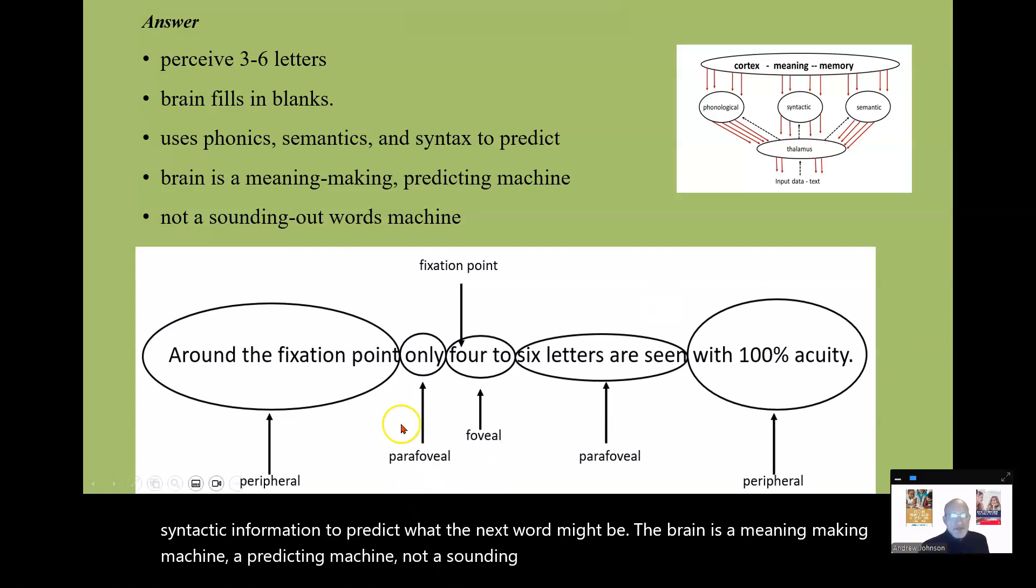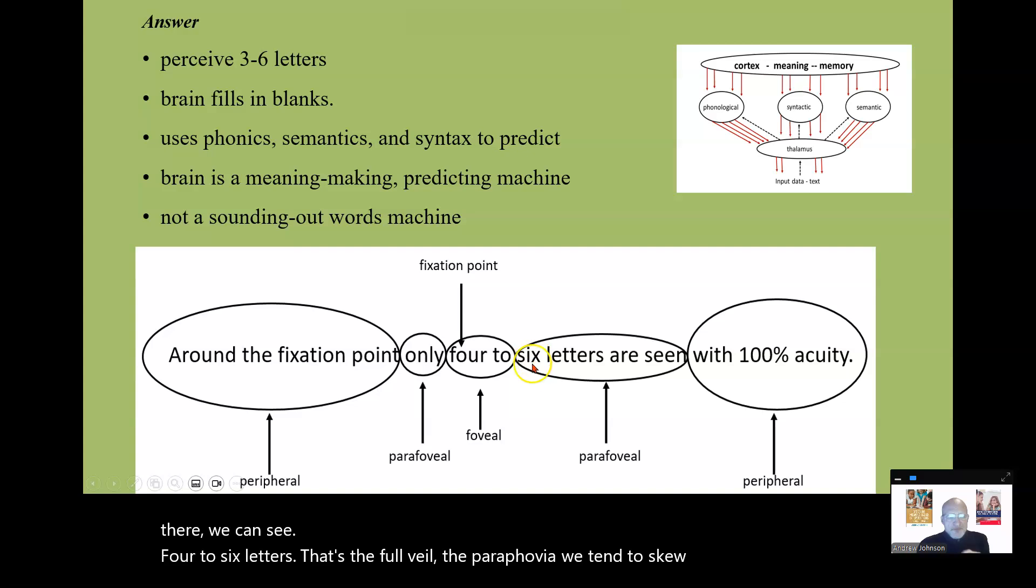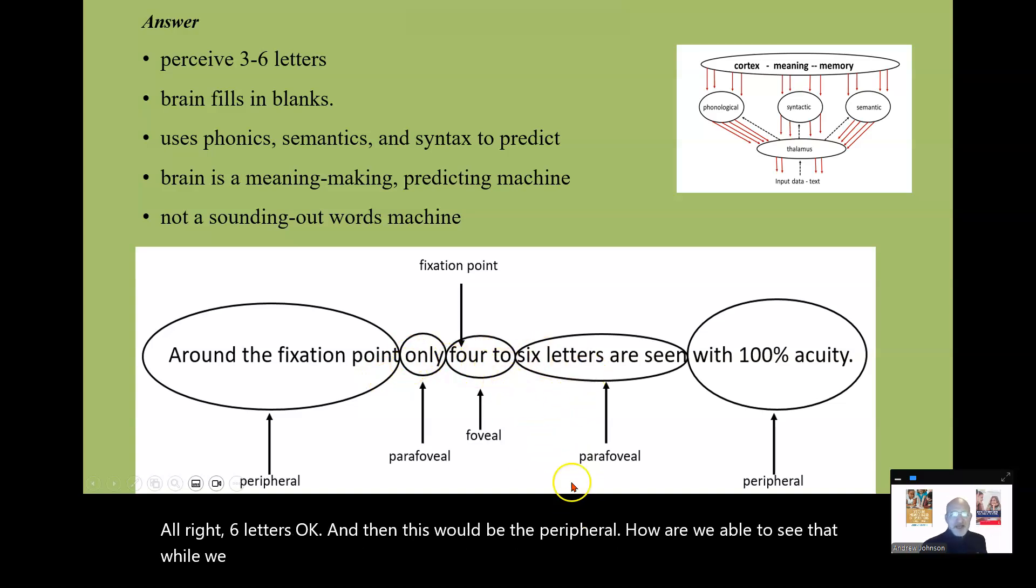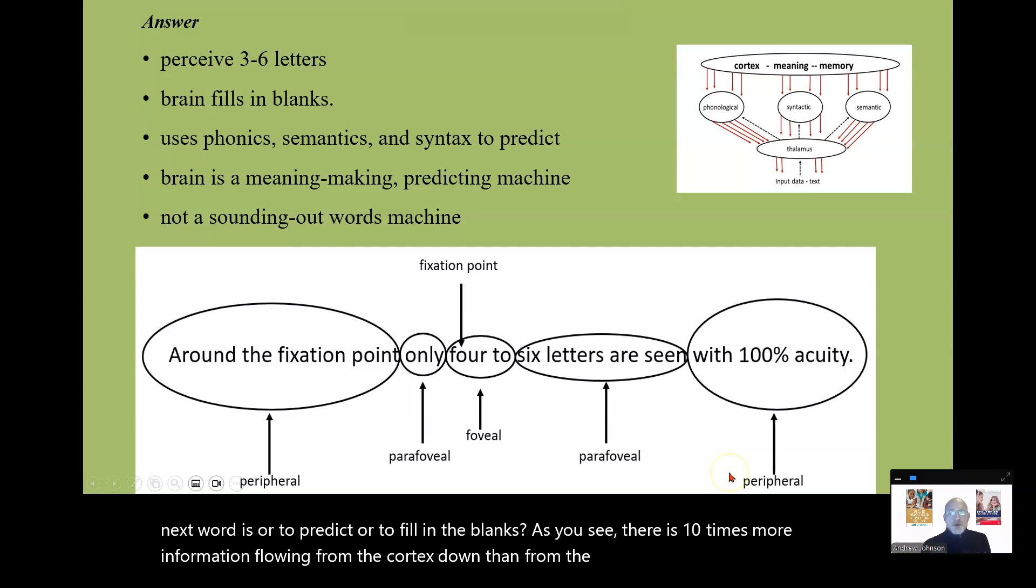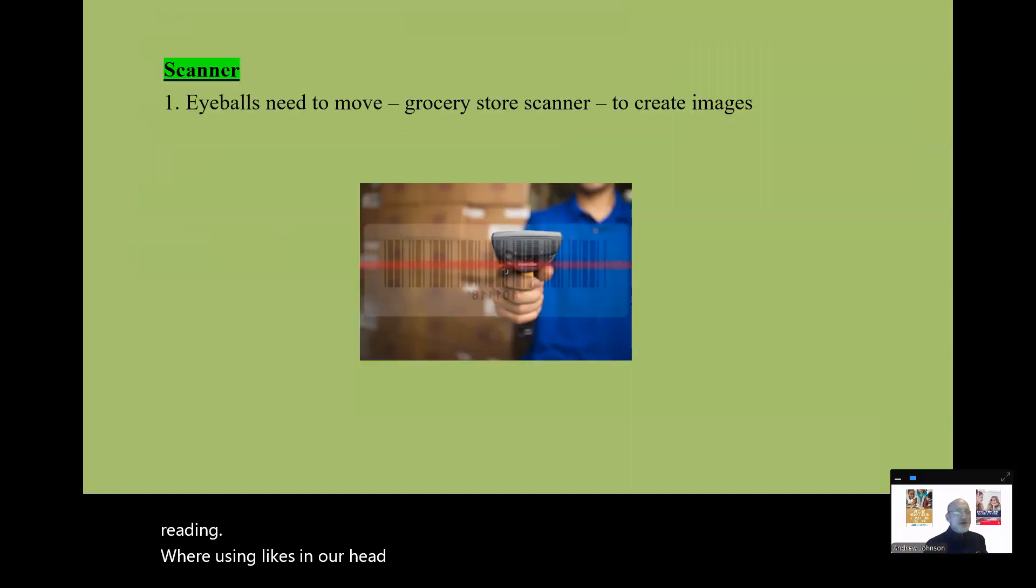So our eyes fixate right there. We can see four to six letters. That's the foveal. The parafoveal, we tend to skew more in front. And then this would be the peripheral. How are we able to see that? Well, we are filling in the blanks, using all this information to make guesses about what the next word is, or to predict, or to fill in the blanks. As you see, there's ten times more information flowing from the cortex down than from the thalamus up during the act of reading. We are using what's in our head to make sense of what's on the page.